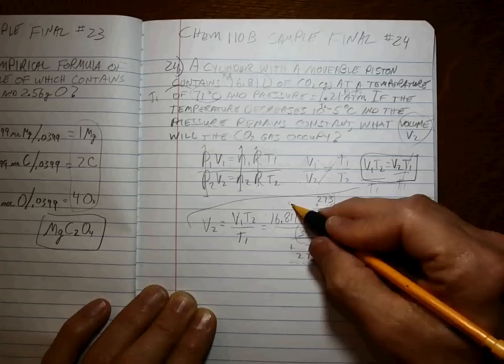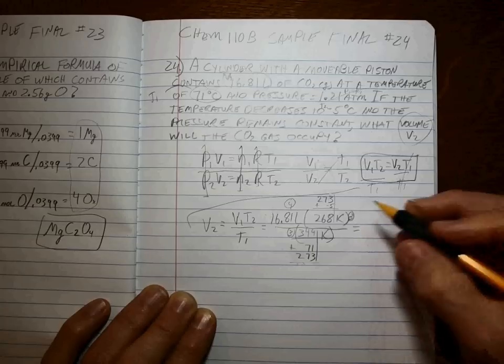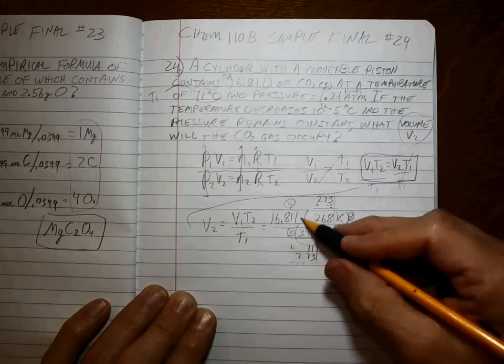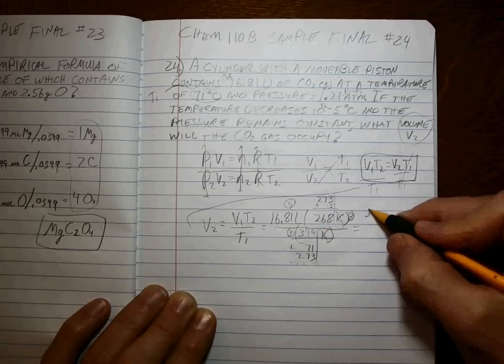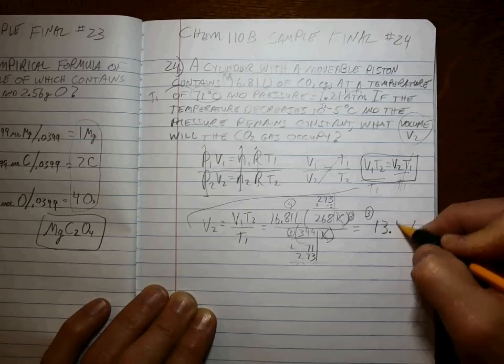Okay, 3 sig figs here and here, 4 sig figs there. Kelvin cancels where left went to liters, to 3 sig figs. When you punch that in, it's 13.1 liters.